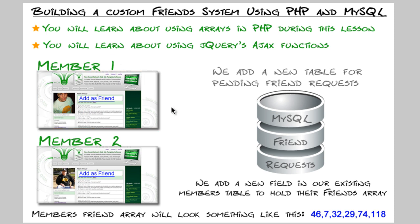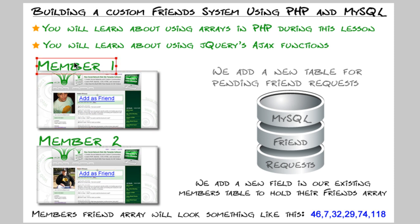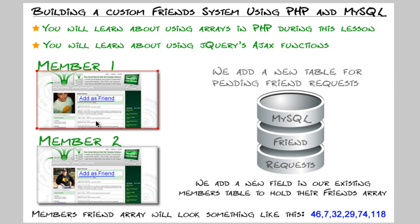Let's lay out the logic. While Member 1 is logged in, he goes to Member 2's profile. We want to make sure he sees an 'Add as Friend' link on that profile. If a visitor is not logged in, we won't show that link — or we'll gray it out — so non-members can't send friend requests. When Member 1 clicks add friend, we put that pending request into a new MySQL friend requests table.